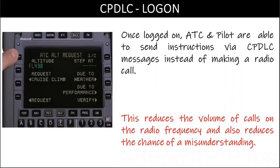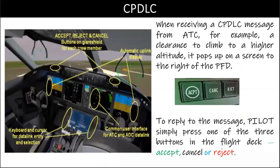Once logged on, ATC and the pilot are able to send instructions via CPDLC messages instead of making a radio call. This reduces the volume of calls on the radio frequency and also reduces the chance of a misunderstanding. When receiving a CPDLC message from ATC — for example, a clearance to climb to a higher altitude — it pops up on a screen to the right of the PFD. To reply to the message, the pilot simply presses one of the three buttons in the flight deck: accept, cancel, or reject.